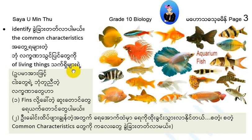What are the characteristics of living things? Cellular structure, metabolism, movement, irritability, reproduction, adaptability.